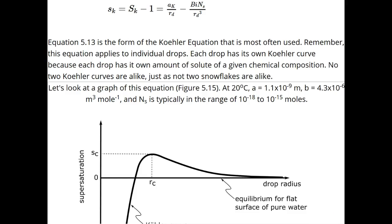Kohler theory is at the heart of cloud microphysics. It deals with two competing processes. One raises the equilibrium saturation vapor pressure above the Clausius-Clapeyron saturation vapor pressure of a flat surface of pure water.